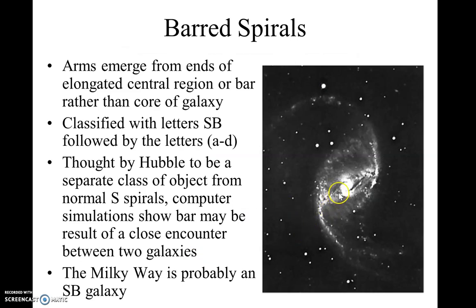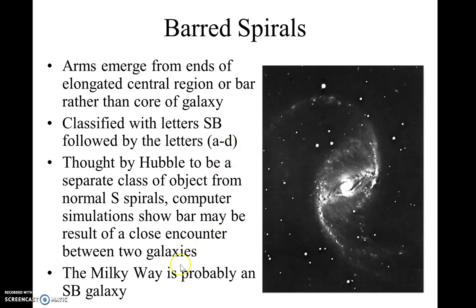He also found, as he was looking at spiral galaxies, that in some galaxies the spiral arms come from a bar of material — not a single point, but a bar of material. He labeled those barred spirals, and they get the designation SB. He further classified them the same way: SB sub-A would be very tightly wound, and sub-D would be the loosest bound. It turns out that the Milky Way is actually a barred spiral — we have very strong evidence of that now.